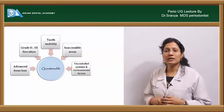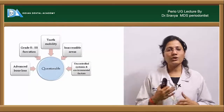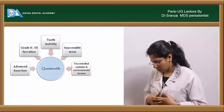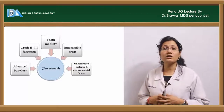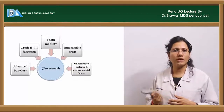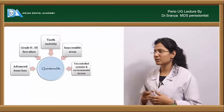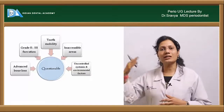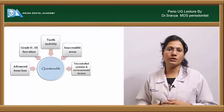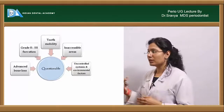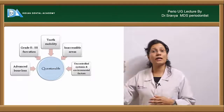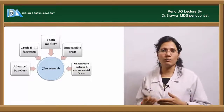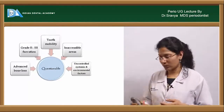When you see questionable prognosis, it means there are uncontrolled systemic and environmental factors, inaccessible areas, and increased grade of tooth mobility — probably grade three mobility. There is grade two to grade three furcation involvement and advanced bone loss.